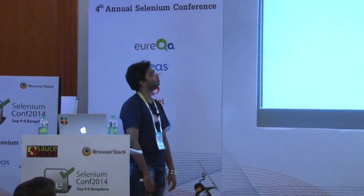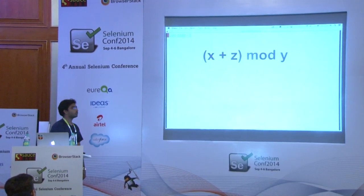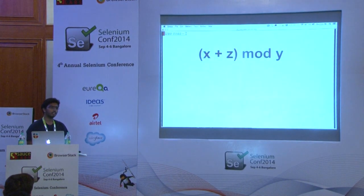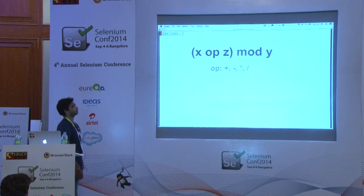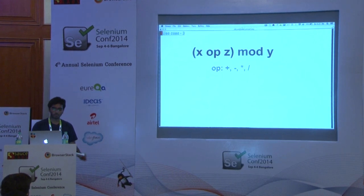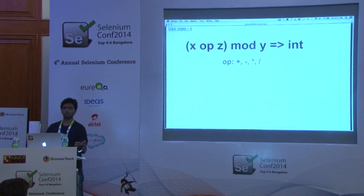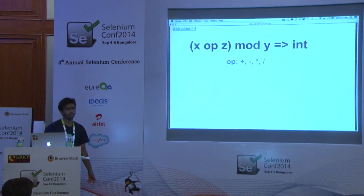Here is my basic use case: I want to do x mod y. Now I've modified my use case — I want x plus z and then mod y. I also want to add flexibility so my function can take any operator for x and z — like plus, minus, multiplication, or divide. And the final use case is I want the output in integer format, or optionally converted to a string. Let's see how to do that in Clojure.